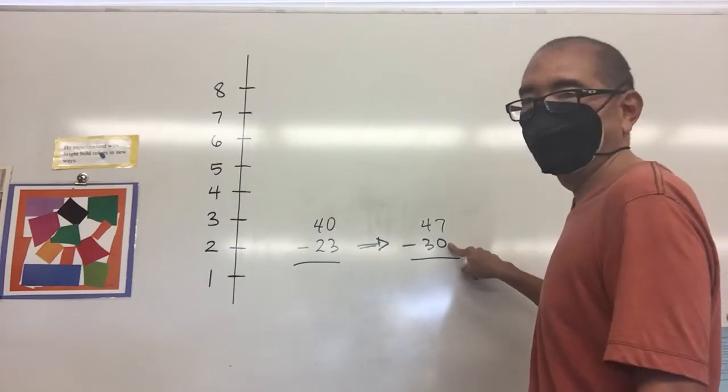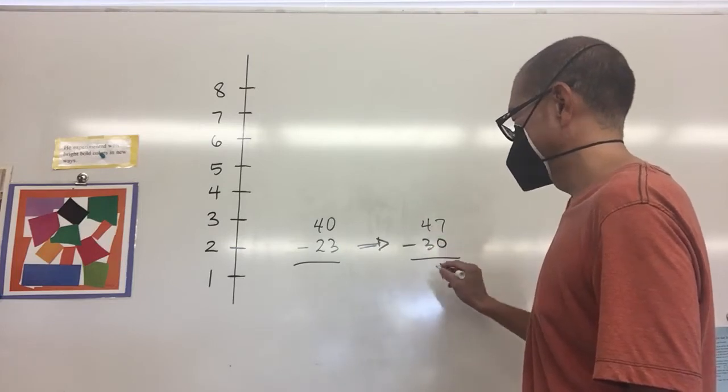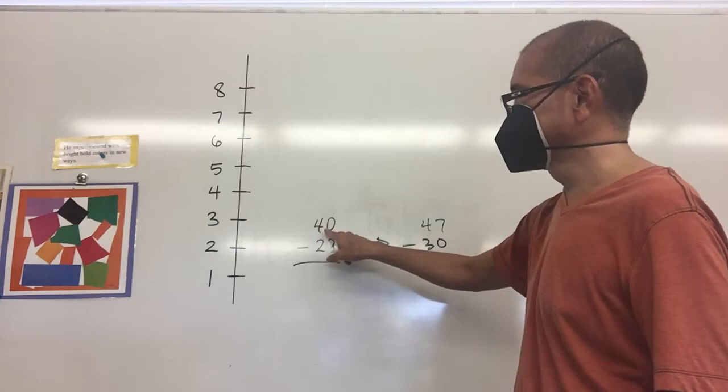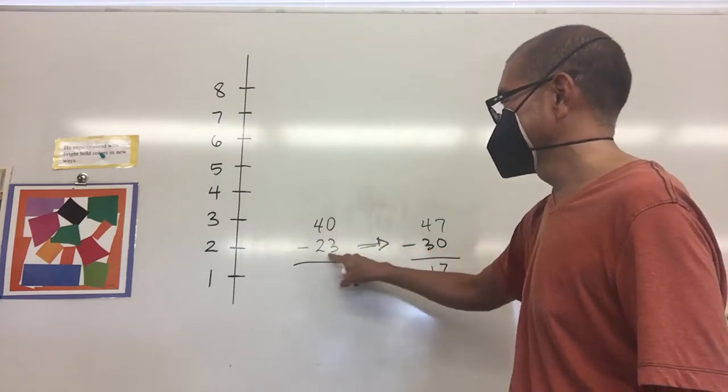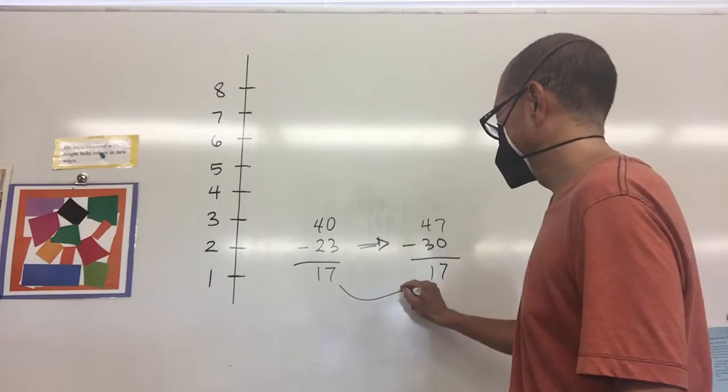Seven minus zero is a lot easier to do so we get a 7, 4 minus 3 is 1 and we get 17. If you were to borrow and rename you should also get 17 here and those two numbers are the same.